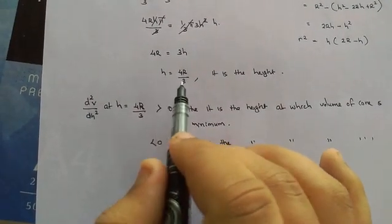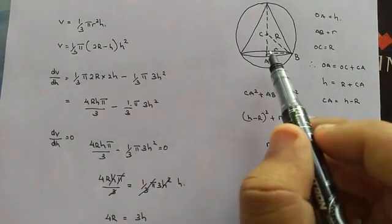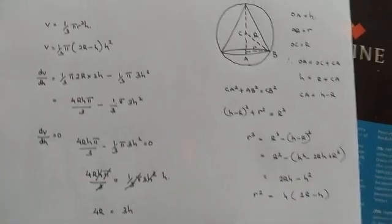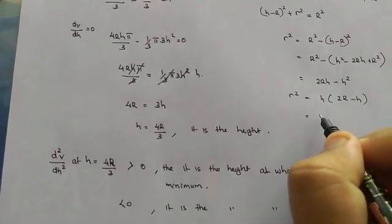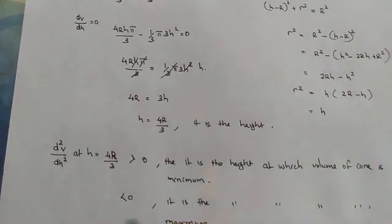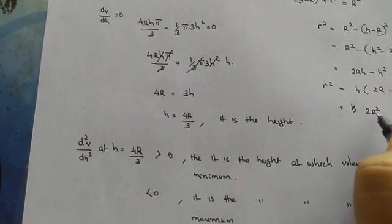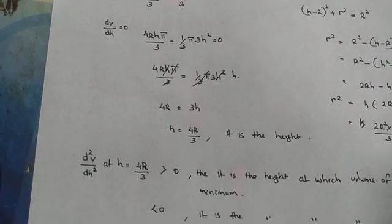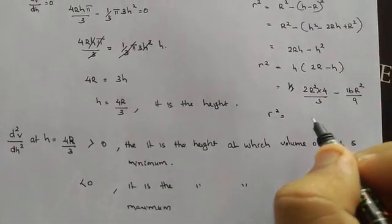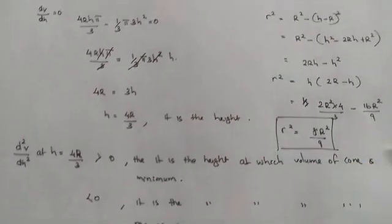Now we find the small r, the base radius of the cone. We know that r squared equals H times (2R minus H). Substituting H equals 4R by 3, we get r squared equals 4R by 3 times (2R minus 4R by 3), which simplifies to r squared equals 8R squared by 9.